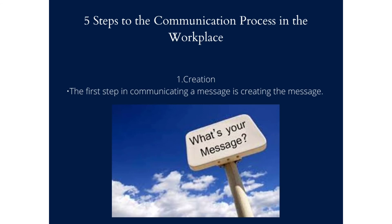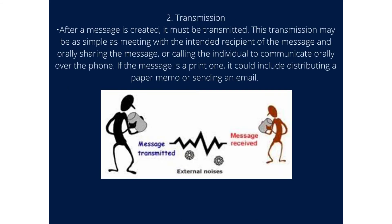Five steps to the communication process in the workplace. First, creation: the first step in communicating a message is creating the message. Second, transmission: after a message is created, it must be transmitted. This transmission may be as simple as meeting with the intended recipient and orally sharing the message, or calling the individual to communicate orally over the phone. If the message is a printed one, it could include distributing a paper memo or sending an email.